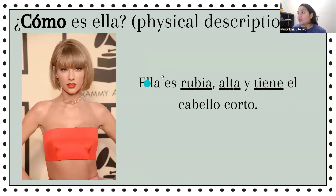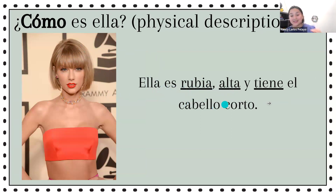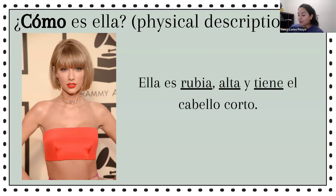¿Cómo es ella? Her physical description. Ella es Taylor Swift. Ella es rubia — blonde — es alta, no es baja like profe or Shakira. She's tall. Y tiene el cabello corto. We have corto — the opposite of largo es corto. The opposite of long is short — corto.